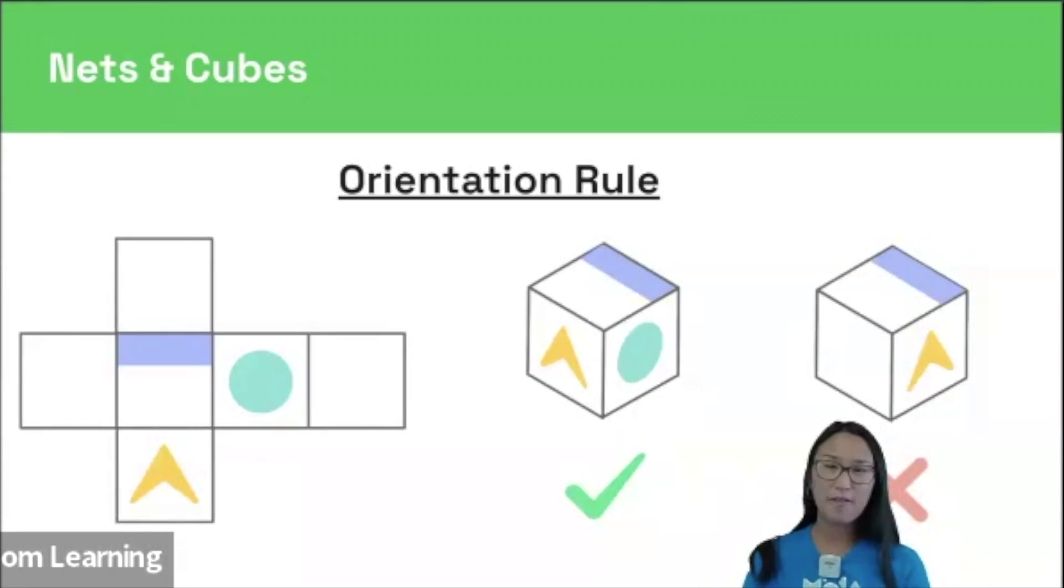Our third and final rule is the orientation rule. So some cubes can't be made from our net because they show shapes in the wrong orientation. This is when a shape is pointing the wrong way.